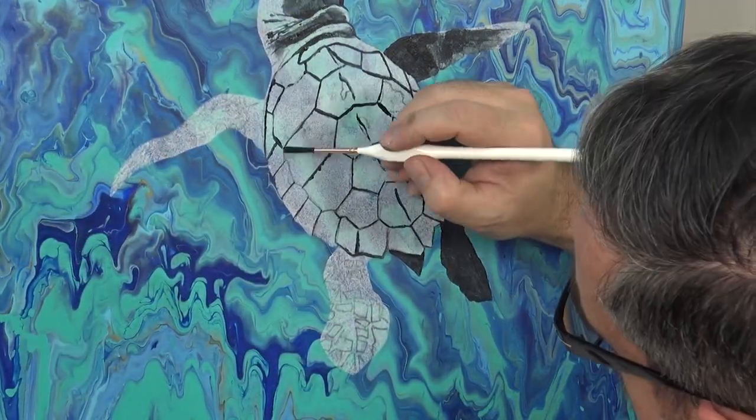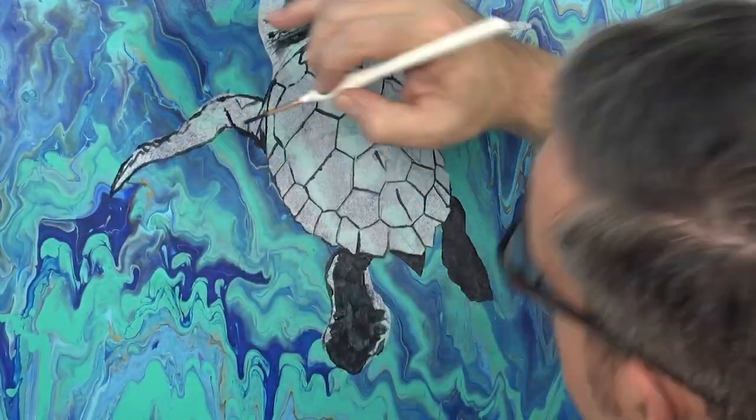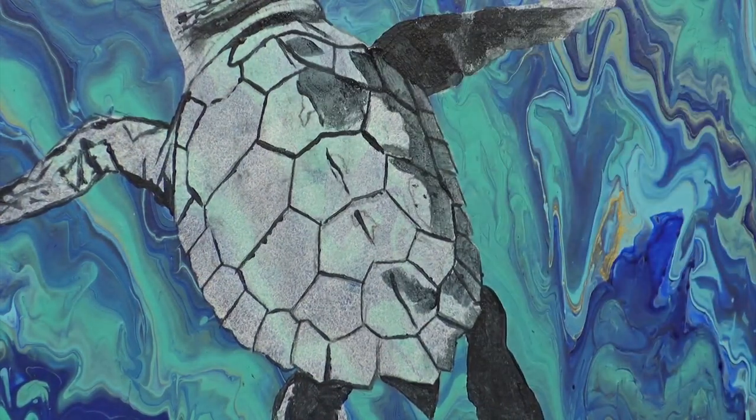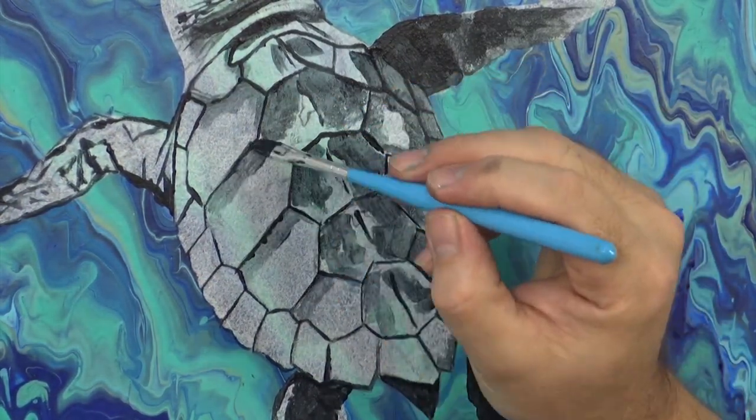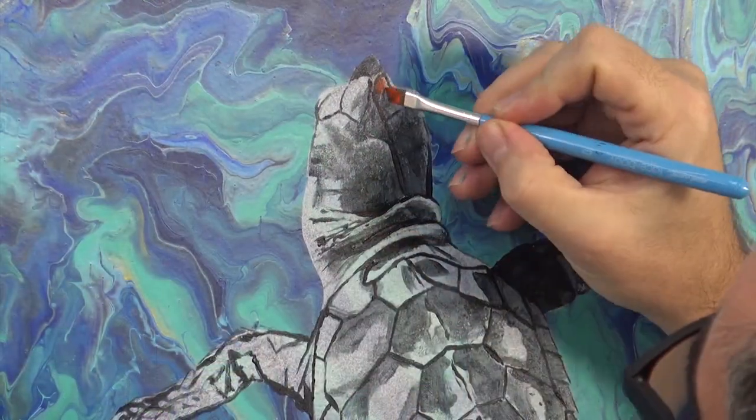Now to define the segments of the shell. I use a number one detailer to paint in any fine lines. Thin the paint with a little more water to create an even lighter tone and lay this wash into the shadow areas. Let this dry.